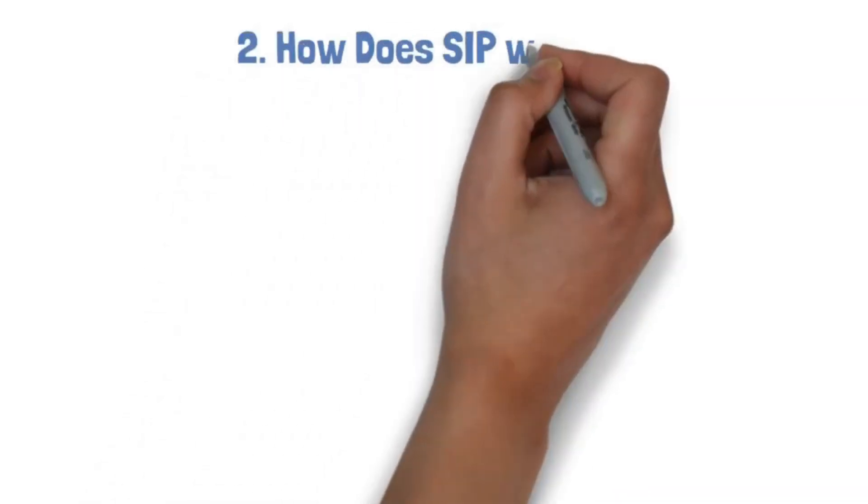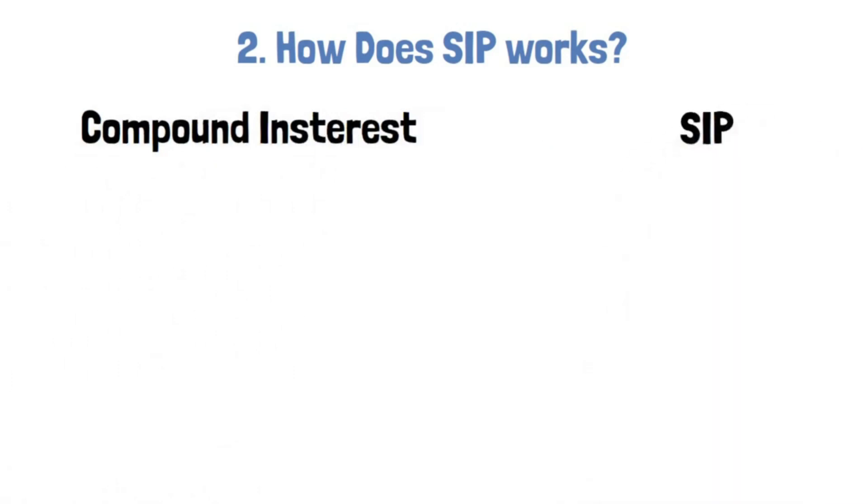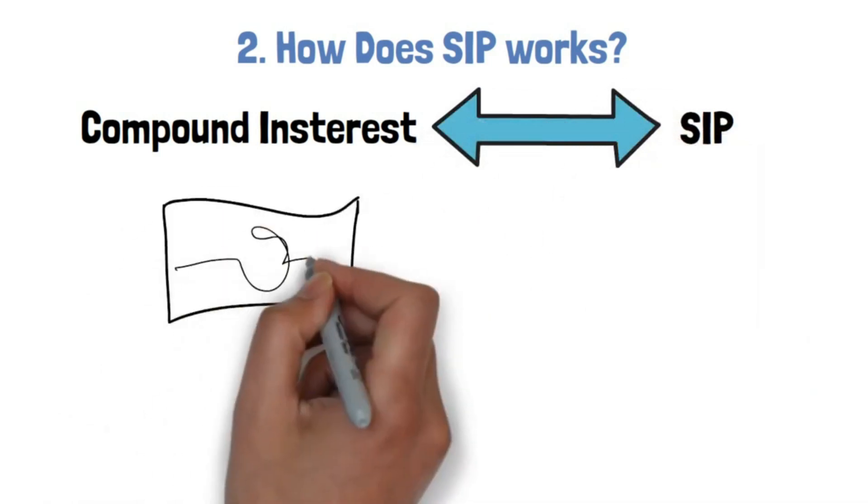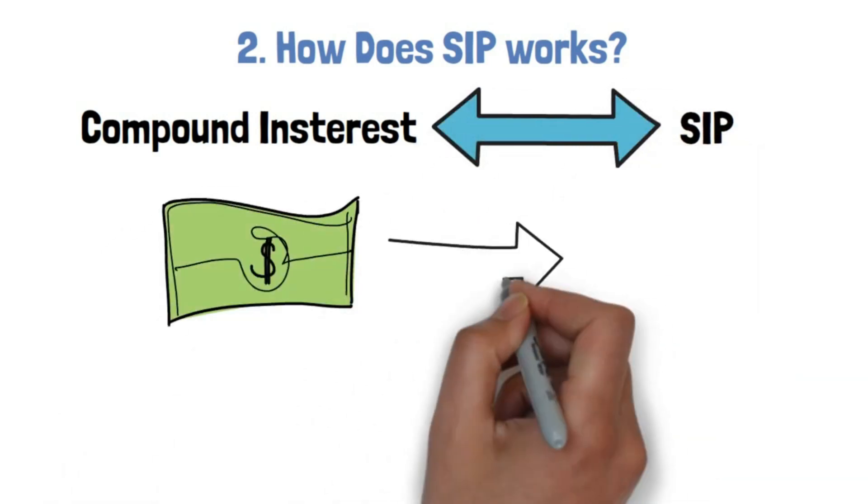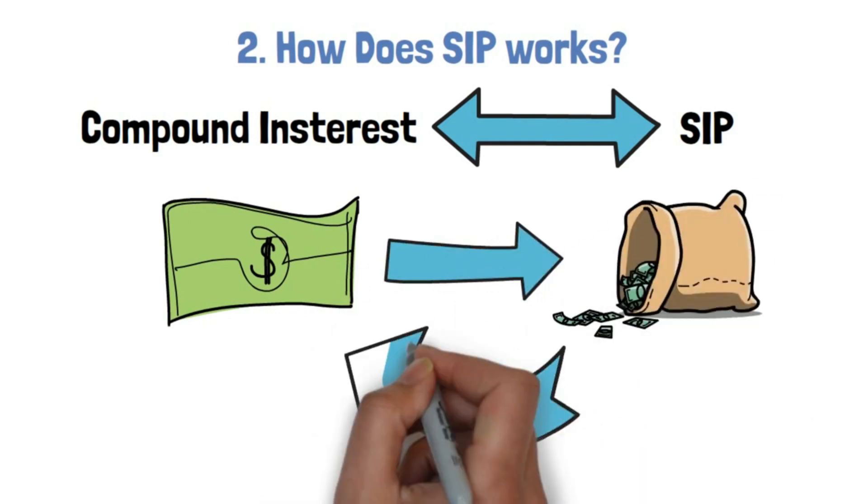2. How does SIP work? Compound interest is the driving force behind a SIP. To ask what a SIP is is to ask what compounding is. Simply said, compounding is the process through which money earns more money, and that extra money earns more money, and so on indefinitely. Compound interest refers to the extra money that money earns.